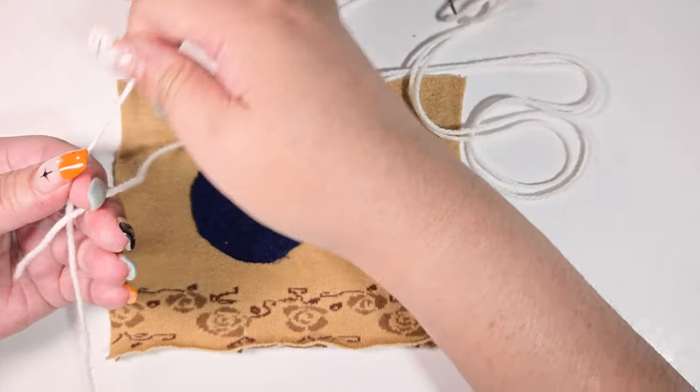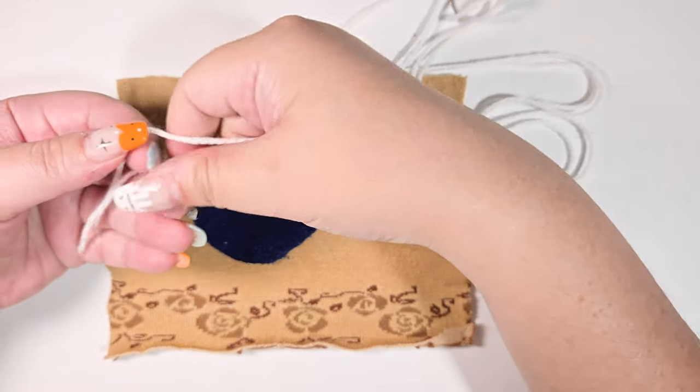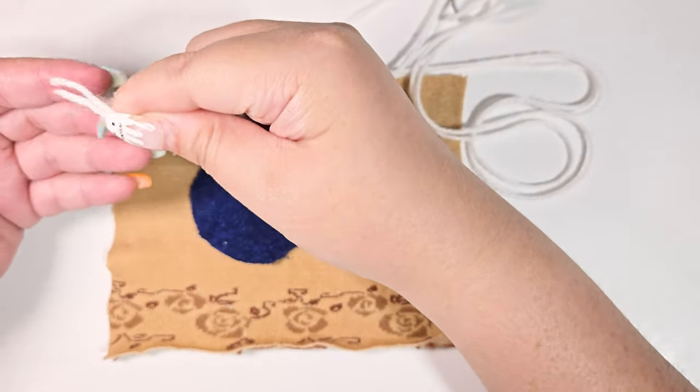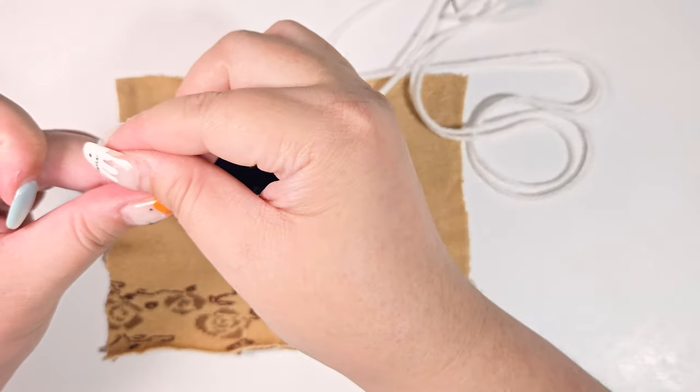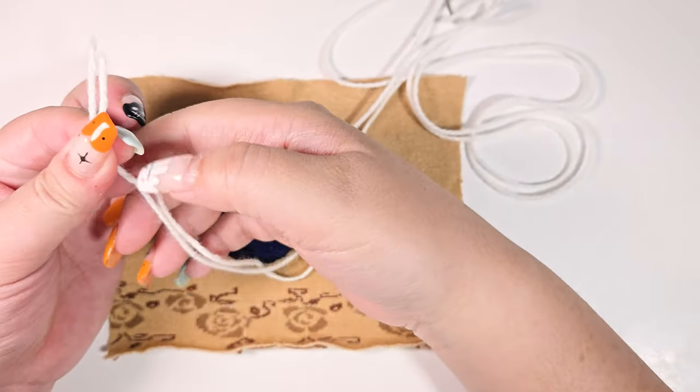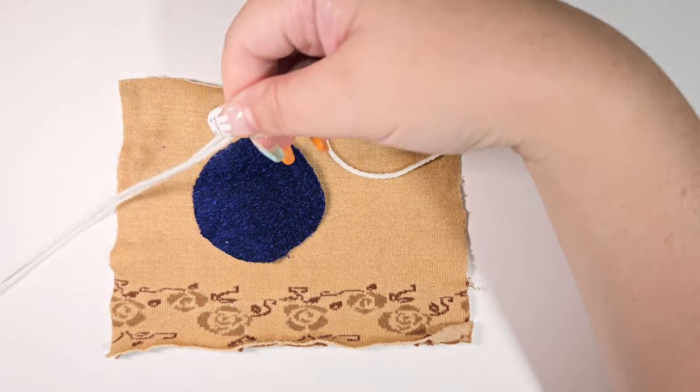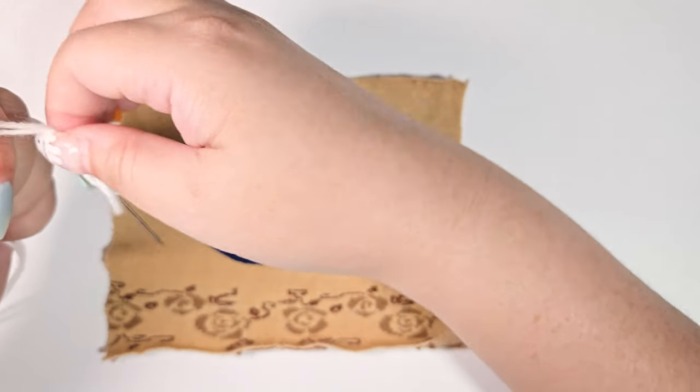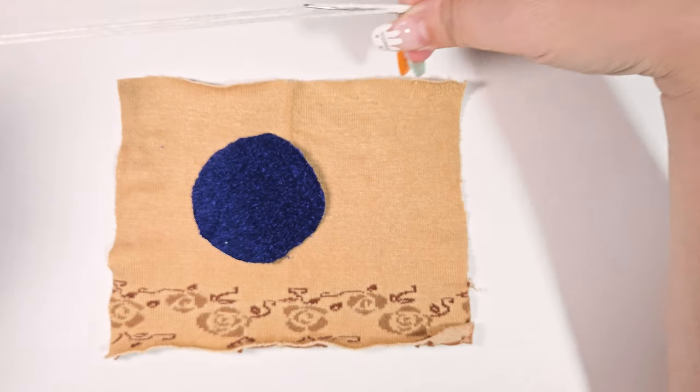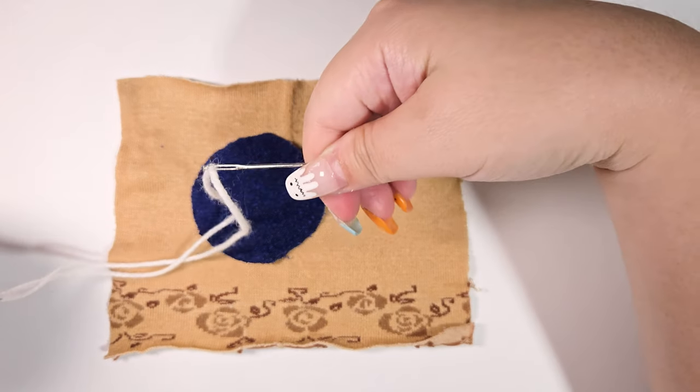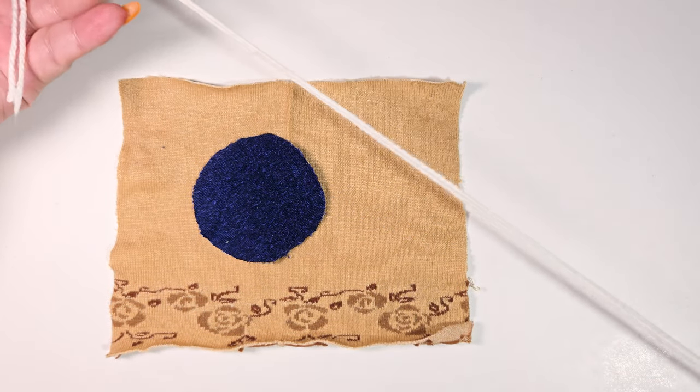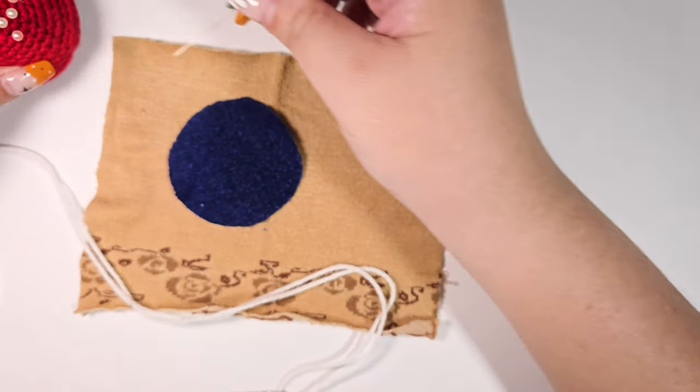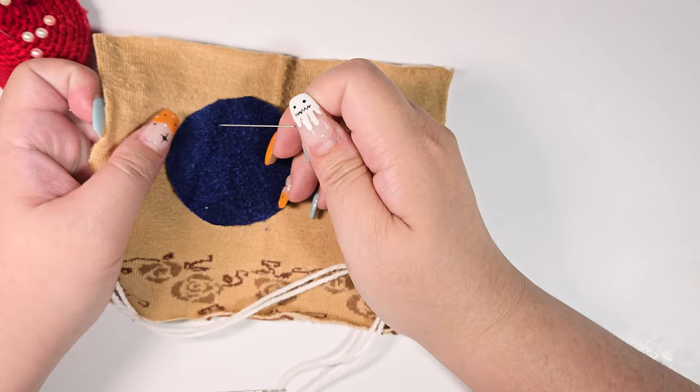We'll be doing double thread to create overlock blanket stitch. To do this, we are going to join the end of the thread so that they are about the same length. I'm using a ball pin to hold the two fabrics in place.